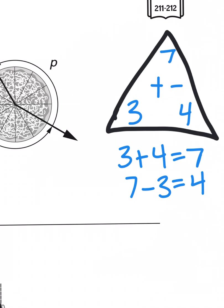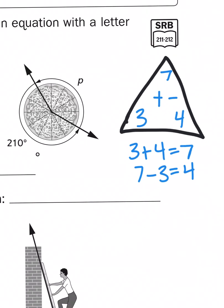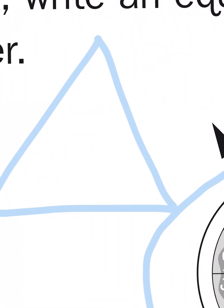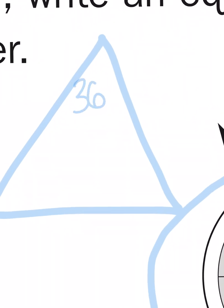But instead of 3, 4, and 7, I have a fact family with this circle that involves 210 degrees and 360 degrees because 360 degrees is the measure of a circle. So my fact family of a circle angle measurement is always going to include 360 degrees.